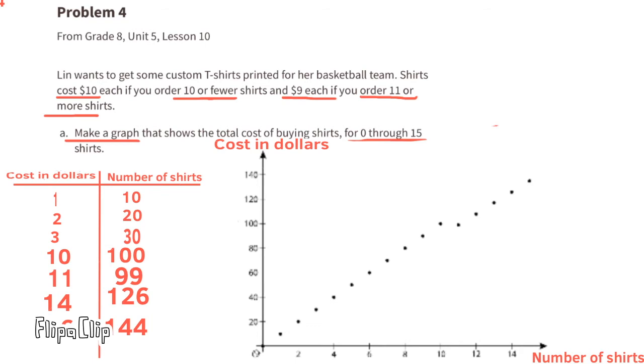The horizontal axis or the x-axis represents the number of shirts. And the vertical axis or the y-axis represents the cost in dollars. On the left hand side I have a table. The right side column of the table represents the number of shirts and correlates with the horizontal axis or the x-axis. And the left hand column represents the cost in dollars, which correlates with the vertical axis or the y-axis.